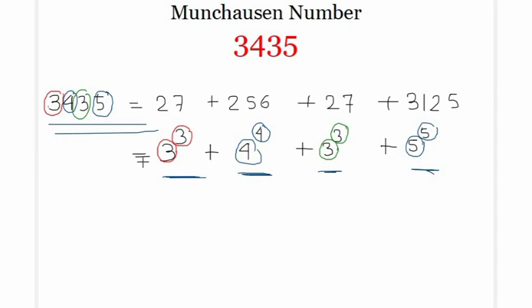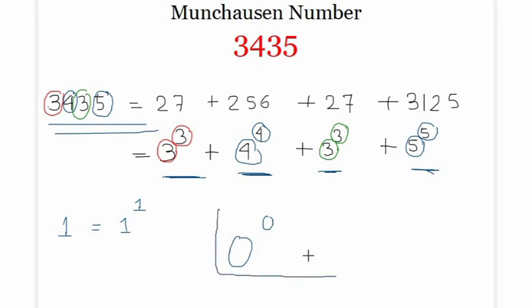How many Munchausen numbers other than 3435 are there? Obviously, 1 is another example because we can always write 1 as 1 to the power of 1 — this is the trivial example. Now there are no other Munchausen numbers, but if we allow the value of 0 to the power of 0 — though we know this is an indeterminate form — if we allow 0⁰ to have the value 0, then similar types of numbers exist.